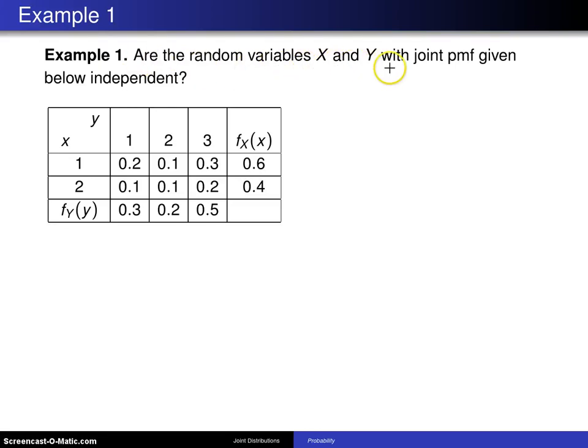Are the random variables x and y with joint probability mass function given below independent? Well, these six values right here give you the joint probability mass function.